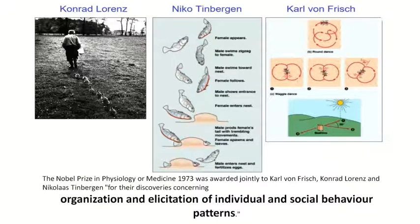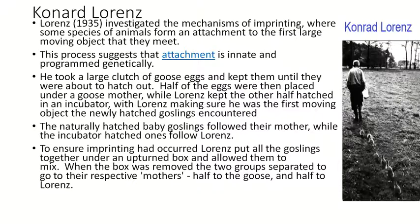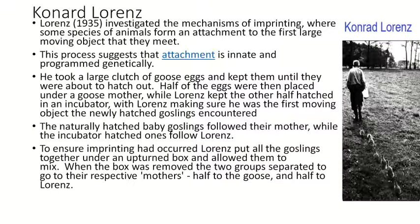Ethology is a newly developed science. Lorenz, in 1935, investigated the mechanism of imprinting, where some species of animal form an attachment to the first large moving object they encounter. Conrad Lorenz said that after birth, the organism becomes attached to the first large moving object it sees — which could be the parent. This process suggests that attachment is innate and programmed genetically.